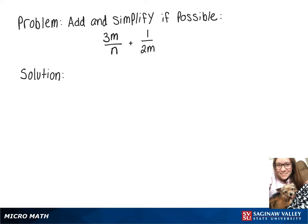In this video, we're going to do 3m over n plus 1 over 2m. In order to add those, we need to have a common denominator.